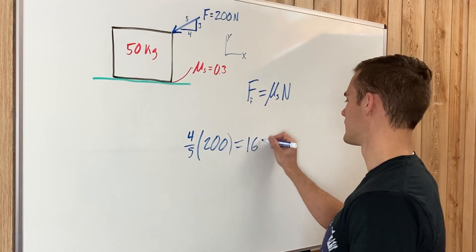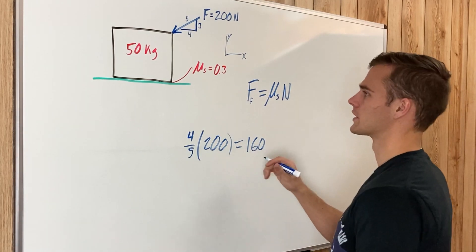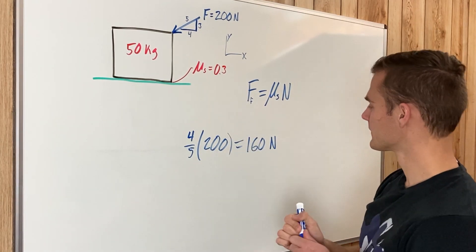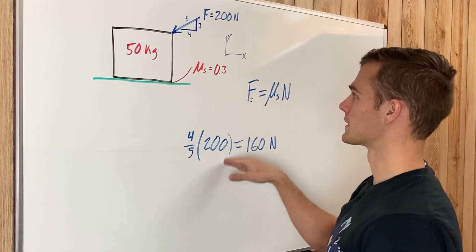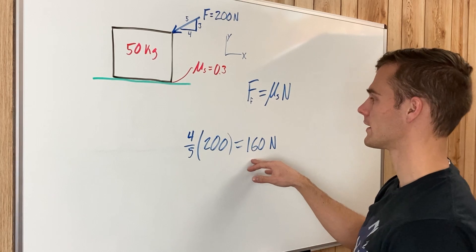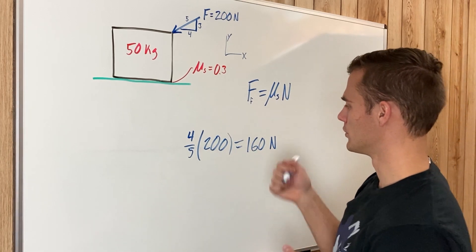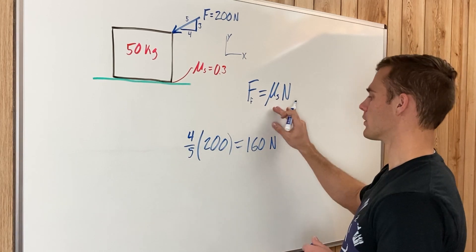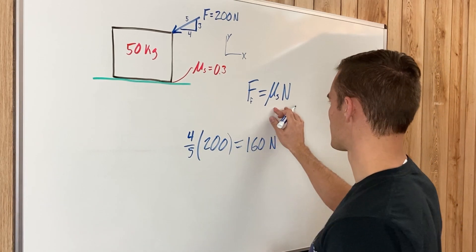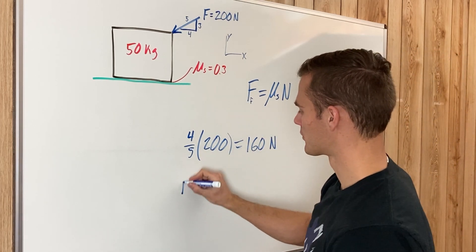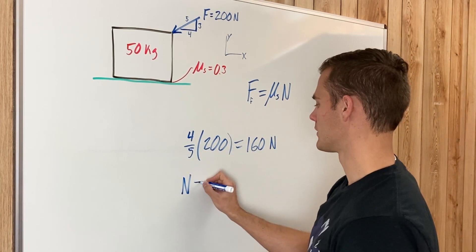Now to check and make sure that this box isn't going to move with that 160 newton force on it, we need to check using this equation. We have the coefficient of static friction multiplied by the normal force, so to find the normal force we need to find out how much this box weighs.